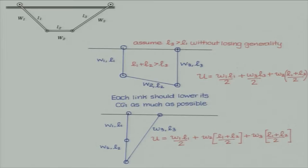L1 and L3 should be vertical, and the line joining the two ends — that will be one minimum configuration straight away. Without losing generality, assume L3 is greater than L1. Then there are two conditions. One is when L1 plus L2 is greater than L3; in that case, the configuration shown at the top will be the minimum energy configuration.